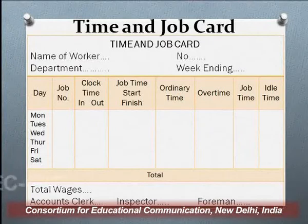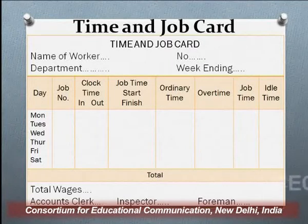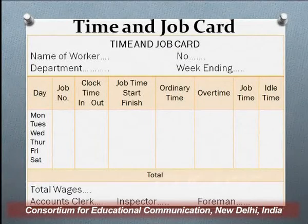The combined card covers clock time and job time — it is being countersigned by the inspector, foreman, and accounts clerk where wages are recorded. This is the combined performa of the time and job card, capturing both the attendance time and the time spent on each job. The performa may change depending on the needs of the organization, but broadly these are the aspects being recorded.